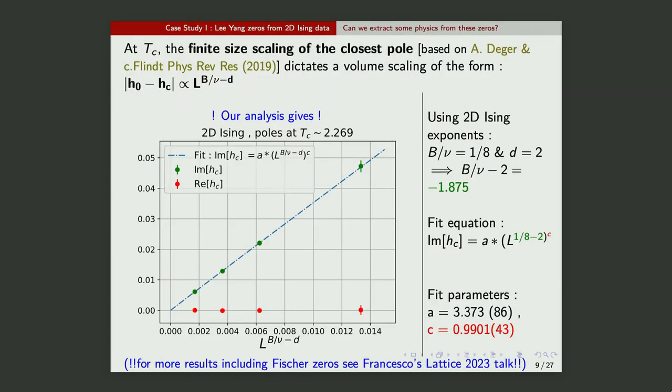Can we extract some physics from these zeros, or is it just verifying theorems? We can. It is known what the finite scaling effect or the finite scaling formula looks like for these zeros. This b/ν minus D is just minus β/δ, which we know for the 2D Ising model to be minus 1.875. What I do is I fit my closest poles that I get for the different lattice volumes to this function. I already take into account the correct β/δ, minus β/δ, and I see what C should be. And you can see from the fit gives me C=1. So I am, and these are with error bars, and they fit the data. So our data is consistent, thankfully, to the 2D Ising model critical exponents. Francesco has done more analysis on this using Fisher zeros, which I will not talk about, and you can go to the proceedings or to his lattice talk for them.